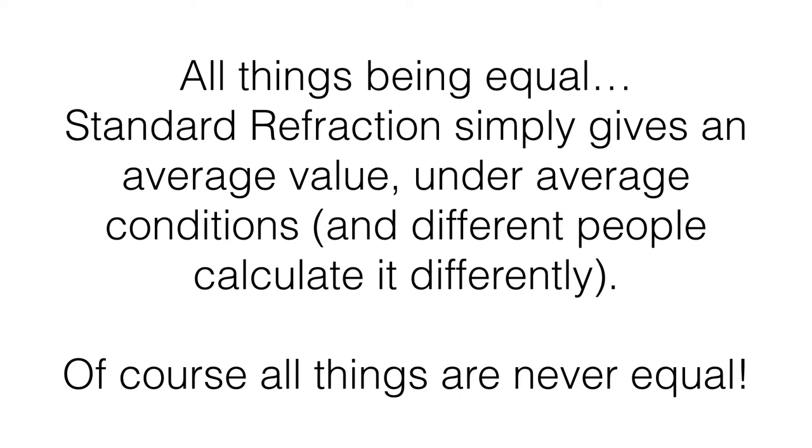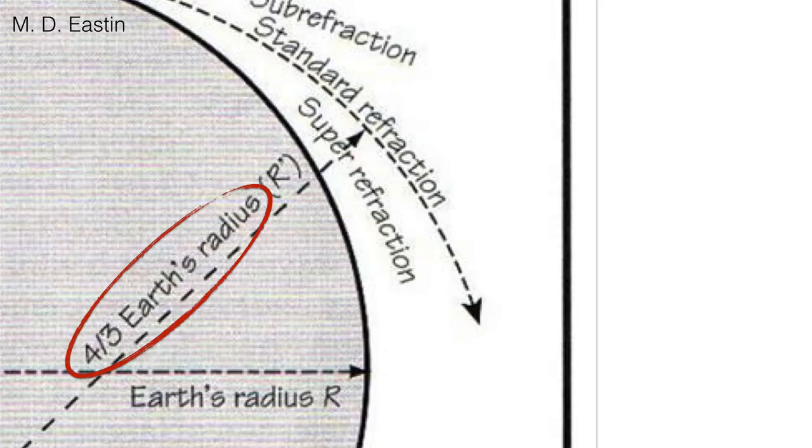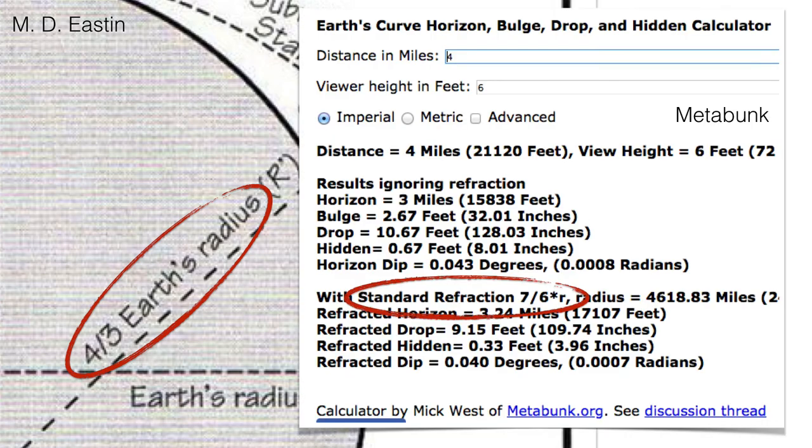Now, when you talk about average, who's average? Who's saying what's average? So different people actually calculate standard refraction differently. And of course, all things are never equal. So in this diagram, which was made by a fellow named Easton, he says standard refraction is four-thirds, or he's using it as part of the calculation, four-thirds Earth radius. Whereas Metabunk uses seven-sixths Earth radius as their standard refraction calculation.